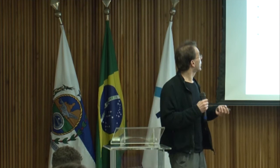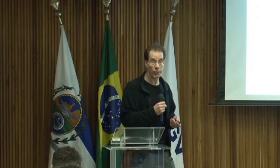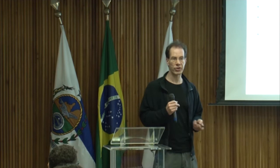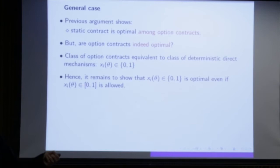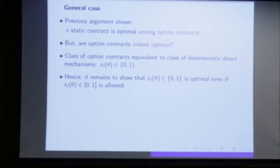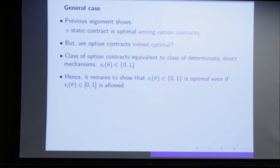What is special about option contracts? Option contracts are deterministic: X is either zero or one. So if we restrict to deterministic contracts, a general deterministic contract is equivalent to an option contract representation. What we have shown is that optimal deterministic contracts do not allow for sequential screening. But we still need to handle stochastic contracts — and that is where the real economic theory comes in. The task is to find conditions under which stochastic contracts are non-optimal.